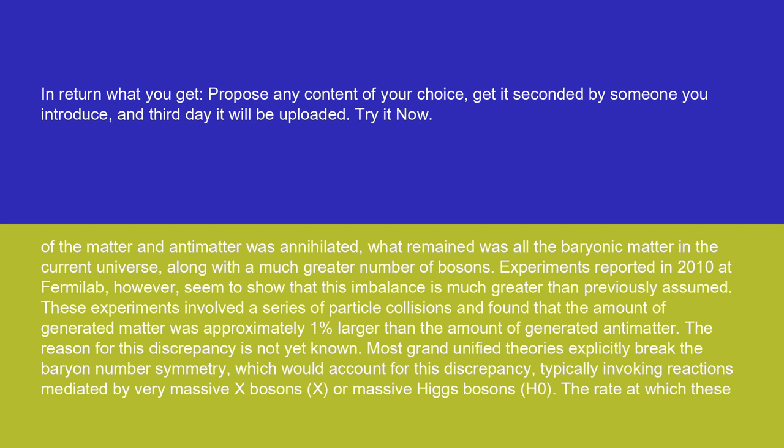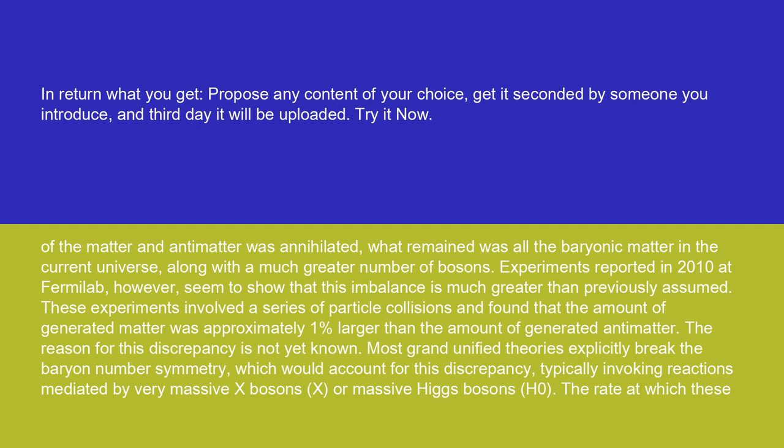Most grand unified theories explicitly break the baryon number symmetry, which would account for this discrepancy, typically invoking reactions mediated by very massive X bosons or massive Higgs bosons (H⁰). The rate at which these events occur is governed largely by the mass of the intermediate X or H⁰ particles. By assuming these reactions are responsible for the majority of the baryon number seen today, a maximum mass can be calculated above which the rate would be too slow to explain the presence of matter today.